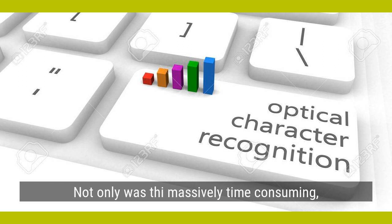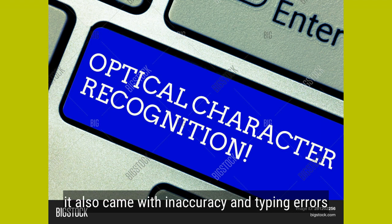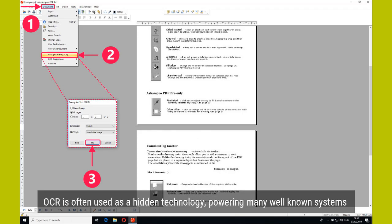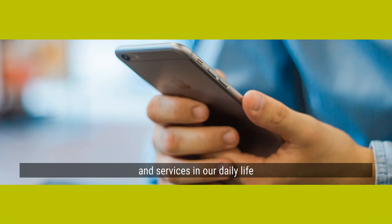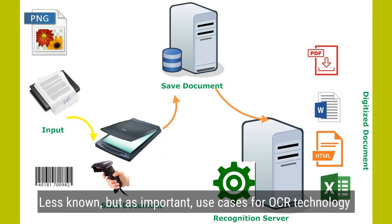OCR is often used as a hidden technology, powering many well-known systems and services in our daily life. Less known, but just as important, use cases for OCR technology include data entry automation, indexing documents for search engines, automatic number plate recognition, as well as assisting blind and visually impaired persons.